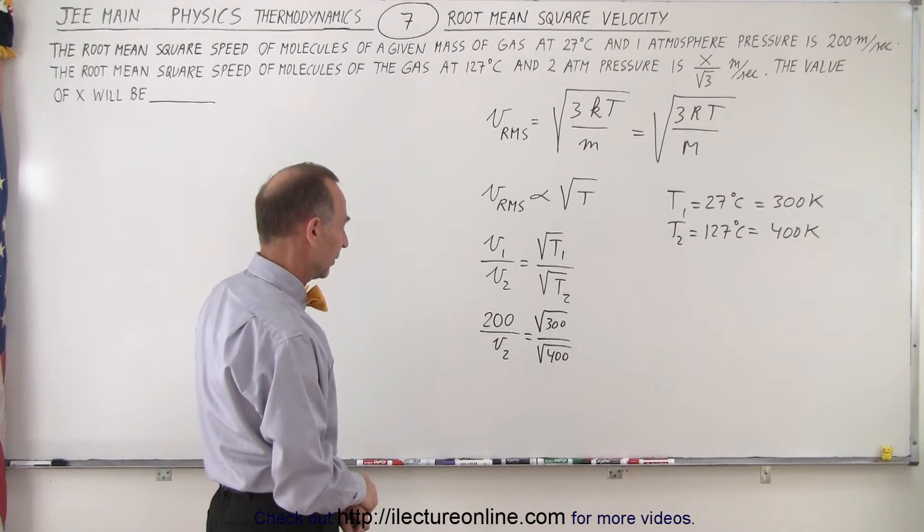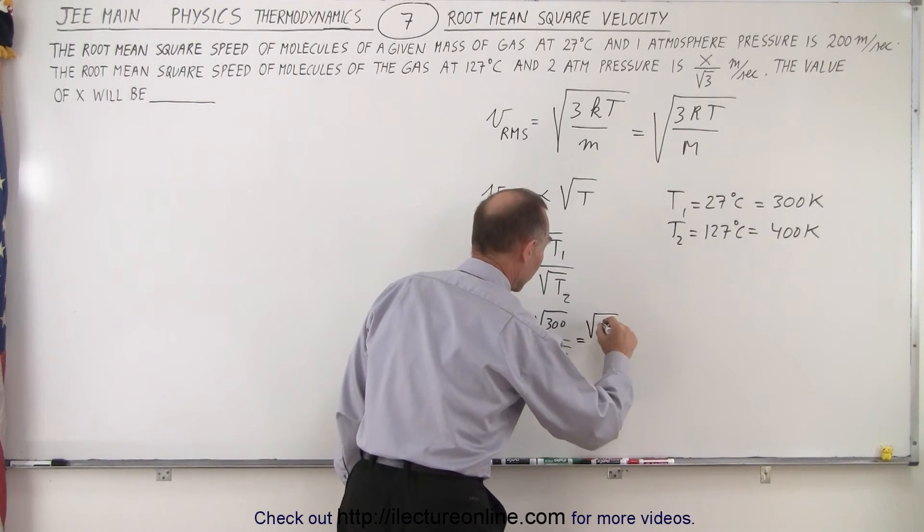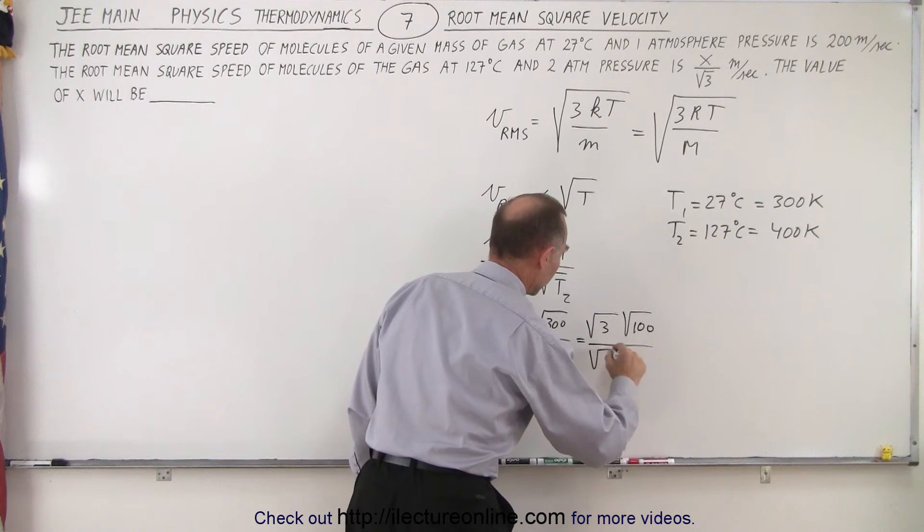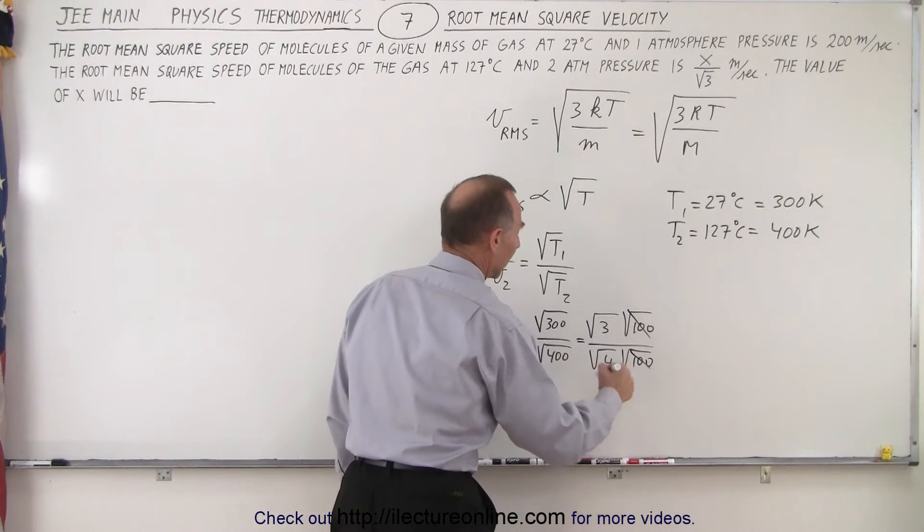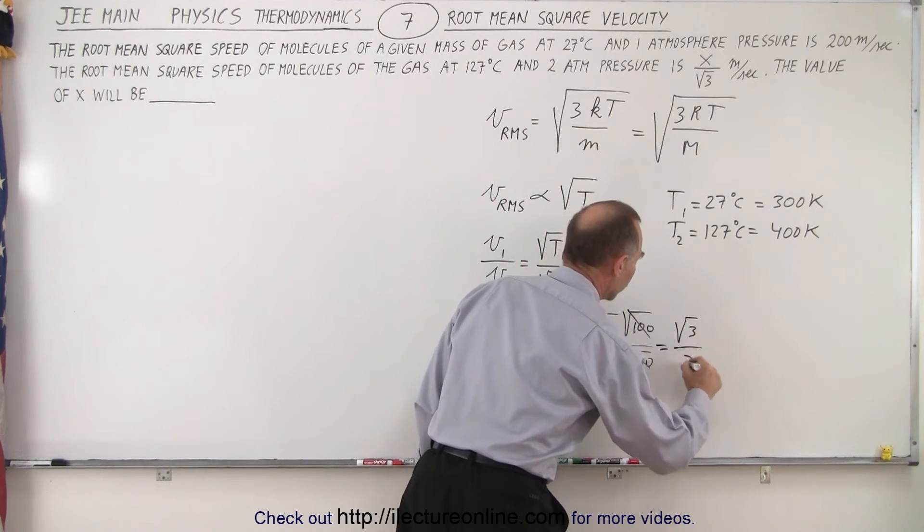All right, now we can simplify that just a little bit by saying that this is equal to the square root of 3 times the square root of 100 divided by the square root of 4 times the square root of 100. Of course, this cancels out, and we're left with the square root of 3 over the square root of 4, or the square root of 3 over 2.